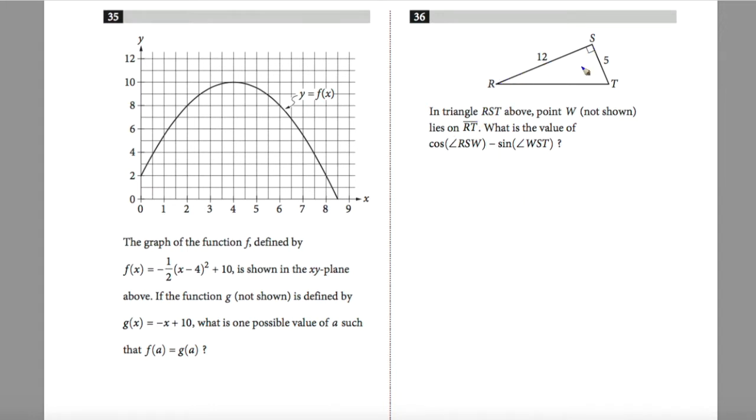Question 36, in triangle RST, point W not shown lies on RT. What is the value of cosine RSW minus sine WST? This is actually pretty simplistic because both of these angles here are complementary to each other, meaning they add up to the 90 degree angle. And the rule is that when you have complementary angles, the cosine of one angle is equal to the sine of the complementary angle. So if these are equal and I'm subtracting them, then your answer will be zero altogether.